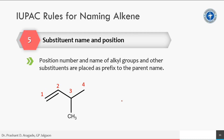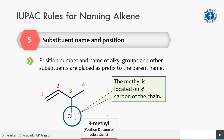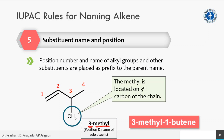Rule number five: substituent name and position. Always prefix the position number and name of any alkyl group or substituent to the parent name. In the example, there is a methyl substituent located on carbon number three of the chain, so it is named '3-methyl'. The full name of the compound becomes 3-methyl-1-butene. Always remember that the position number and name of substituents are separated by a hyphen.